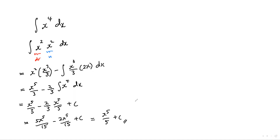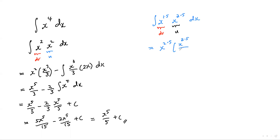Let's try one more combination and see if it still works: x to the power of 1.5 times x to the power of 2.5. They're equally easy to integrate, so let's use x to the power of 1.5 as dv. So uv would be x to the power of 2.5, and v would be x to the power of 2.5 over 2.5 — that's the integral of x to the power of 1.5 — then minus integrate v du, where du is 2.5 x to the power of 1.5.